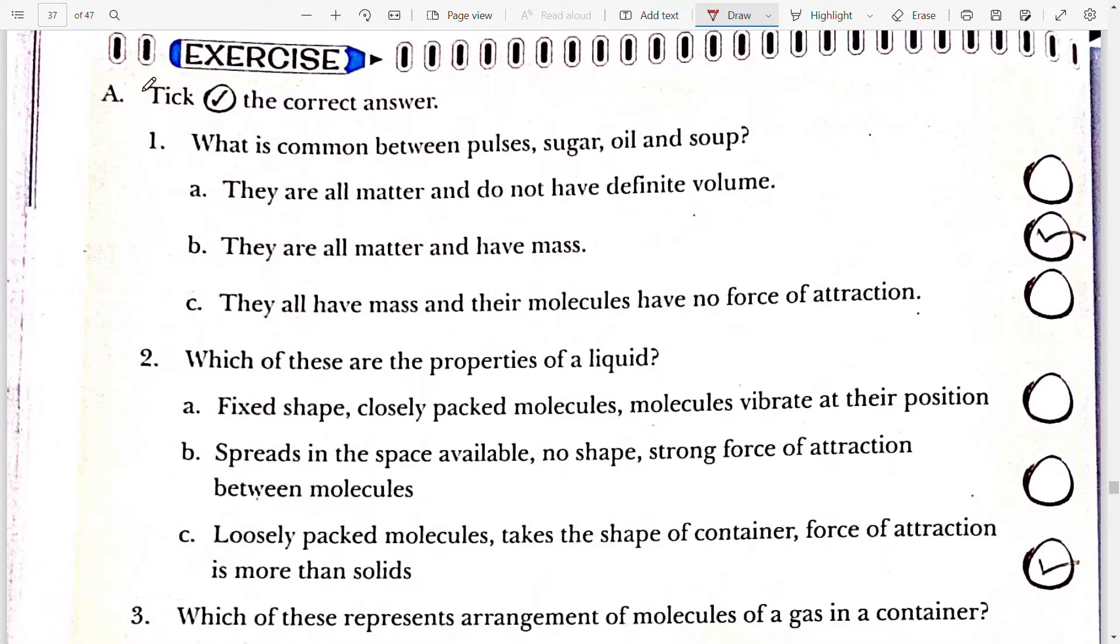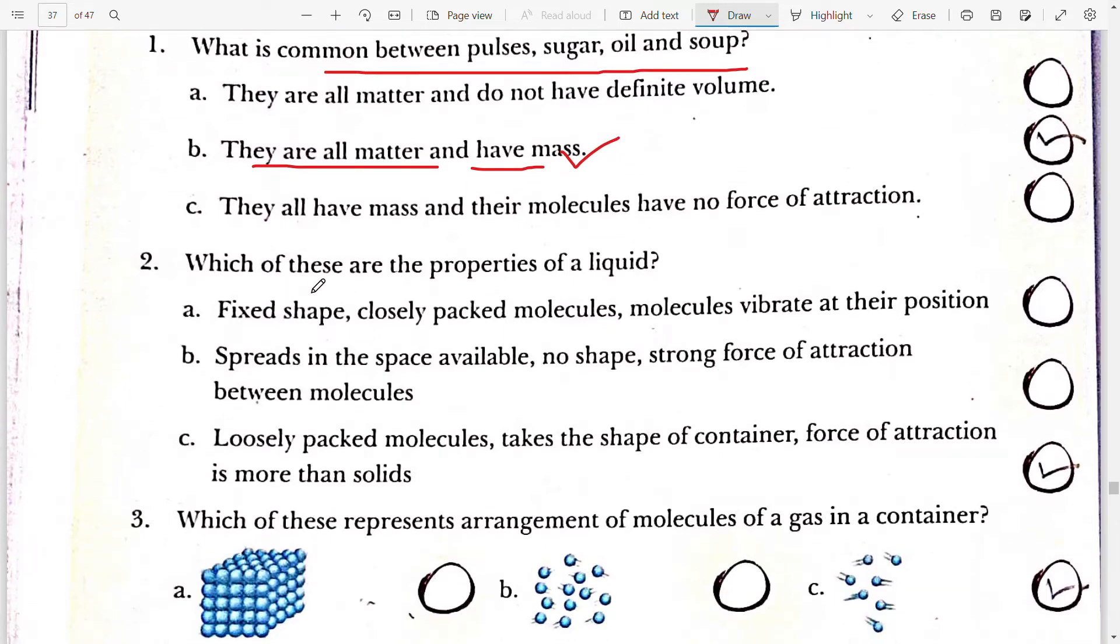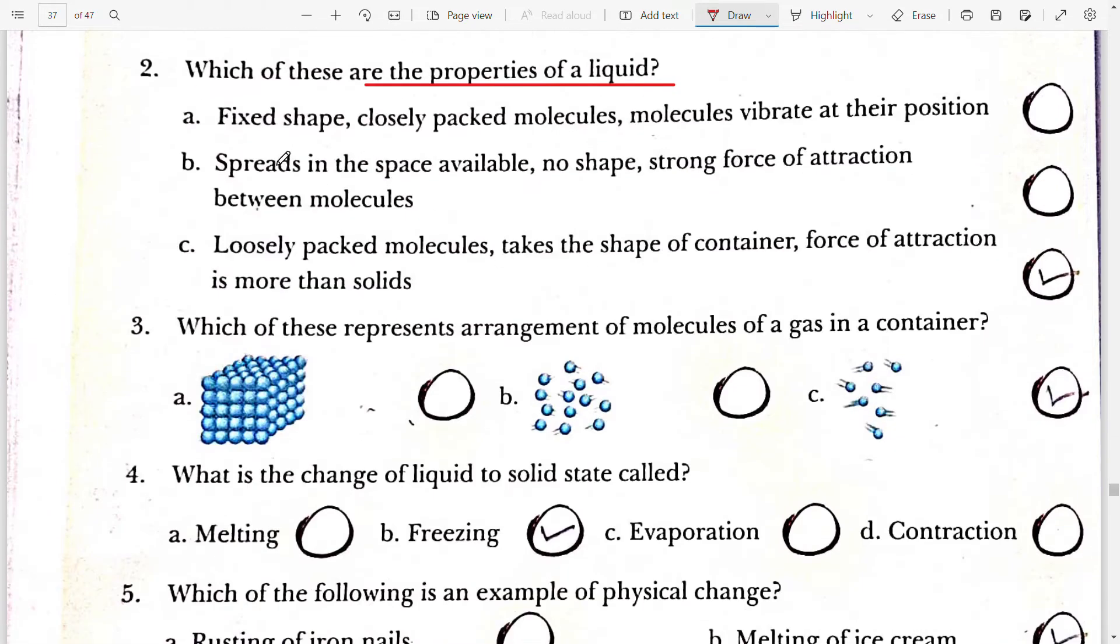Moving to the next first book exercise, tick the correct answer. What is common between pulses, sugar, oil and soup? They all are matter, have mass. So correct option is B. Which of these are properties of a liquid? You have to identify from these three options what is the property of a liquid. Loosely packed molecules, takes the shape of container, force of attraction is more than solid.